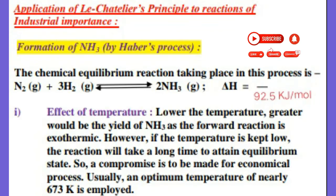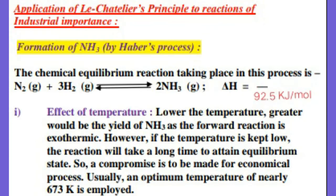Let us see the effect of temperature on the above reaction. According to Le Chatelier's Principle, lower the temperature, greater would be the yield of Ammonia, as the forward reaction is exothermic. However, if the temperature is too low, the reaction will take a long time to reach equilibrium state. So, a compromise is to be made for an economical process. That's why an optimum temperature of nearly 673 K is usually employed during the formation of Ammonia by Haber's Process.